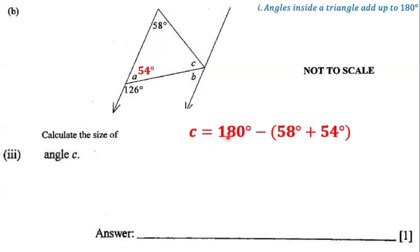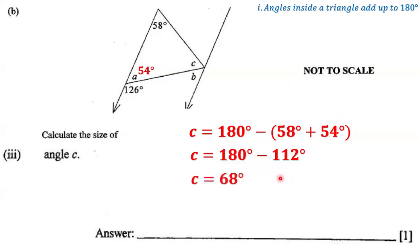C is equal to 180 degrees minus (58 plus 54). 58 degrees plus 54 degrees gives us 112 degrees. So angle C equals 180 degrees minus 112 degrees, which means angle C measures 68 degrees. This makes sense because 68 plus 58 plus 54 all add up to 180 degrees, which agrees with our geometrical rule that angles inside a triangle add up to 180 degrees. So the answer is C equals 68 degrees.